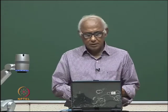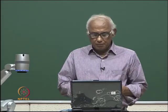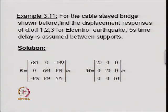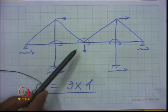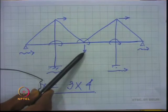In the previous class, we were discussing an example problem in which we want to find out the displacement response of the structure using modal analysis technique. The problem was that of a cable-stayed bridge, which we had solved before for finding out the value of the R matrix. The degrees of freedom considered as dynamic degrees of freedom are these two displacements at the top of the tower and a vertical displacement at the middle of the deck.